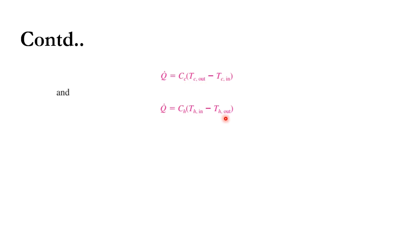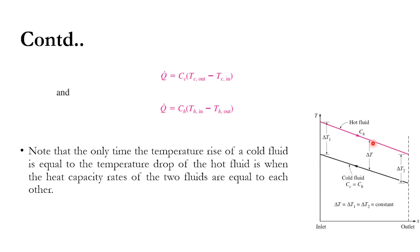Looking at the graph, the hot fluid line and cold fluid line are shown. When C_h equals C_c, the temperature difference of the hot fluid equals the temperature difference of the cold fluid, since Q_hot = Q_cold. For instance, if the temperature change of the hot fluid is 25°C, the temperature change of the cold fluid will also be 25°C. The temperature rise of a cold fluid equals the temperature drop of the hot fluid only when their heat capacity rates are equal.